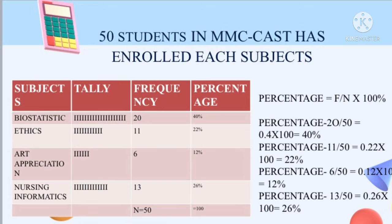For the next slide, we have a data problem: 50 students in MMC CAS have enrolled in subjects. The data set is organized by subject, tally, frequency, and percentage. This is an example of ungrouped data since it is not interval-based and it is categorical. We can see the frequency there, and we should check N — the total number — which is 50.